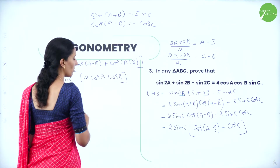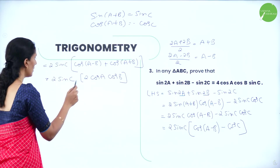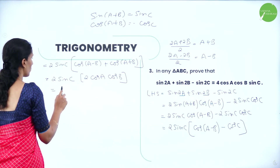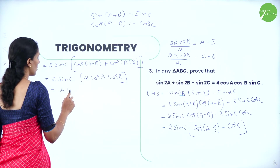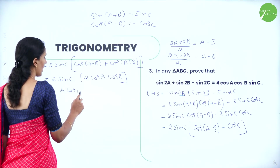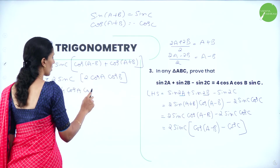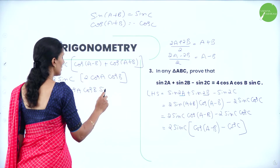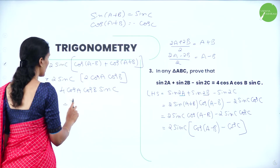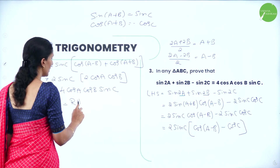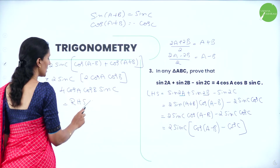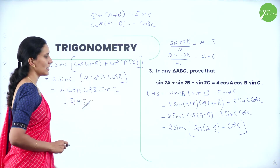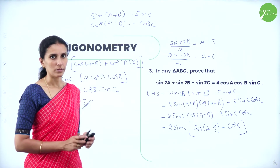Multiplying: 2sinC × 2cosA·cosB = 4cosA·cosB·sinC, which is the right hand side of the required result. Hence it is proved.